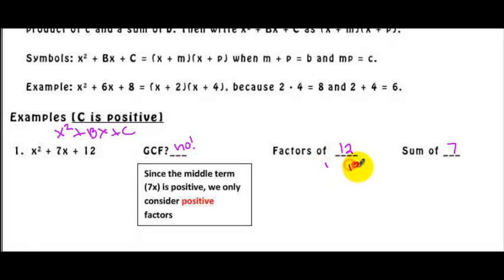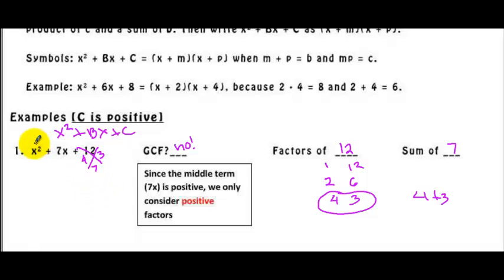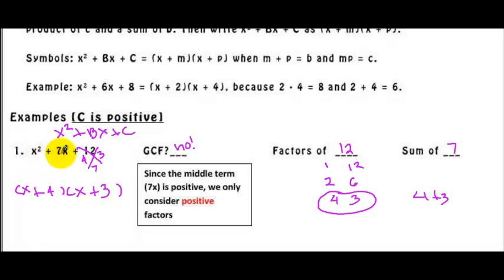The factor pairs of 12 are: 1 and 12, 2 and 6, and 4 and 3. Adding 1 and 12 does not give 7, and adding 2 and 6 does not give 7. But 4 plus 3 equals 7, so 4 and 3 are the factors of 12 we will use. Therefore, the factored form is x plus 4 times x plus 3, which are the factors of x squared plus 7x plus 12.